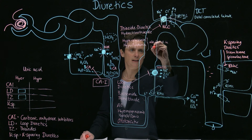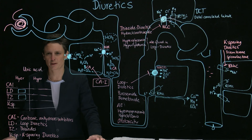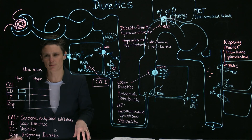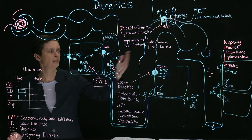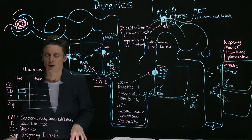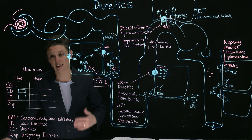Thiazides and loops both cause hyperglycemia and hyperlipidemia. For potassium-sparing diuretics, particularly spironolactone — which acts at the mineralocorticoid receptor — there can also be gynecomastia and impotence. This is not seen with triamterene, which acts directly on ENaC. Spironolactone's effects on gynecomastia and impotence are explained by its activity as an androgen receptor antagonist in addition to its mineralocorticoid receptor blockade. This concludes the video on adverse effects of diuretics.